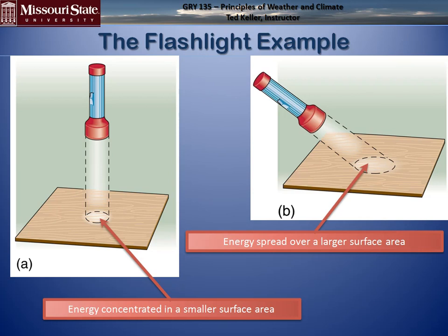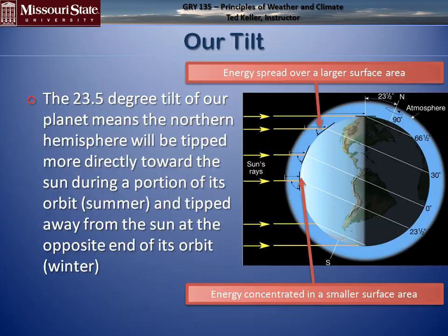Here's the overused but pretty good flashlight example. In A, the light is directly overhead, so the same amount of energy is applied to a smaller surface area, and in B, to a larger surface area.